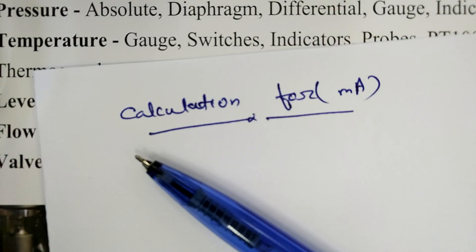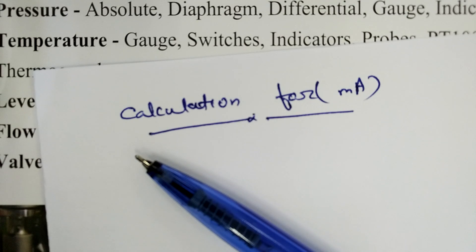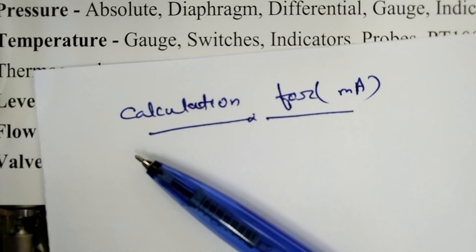Welcome to Calibration. The calibration range is 1 mA — that is the standard mA. 4 to 20 mA is used, and this is an equation.